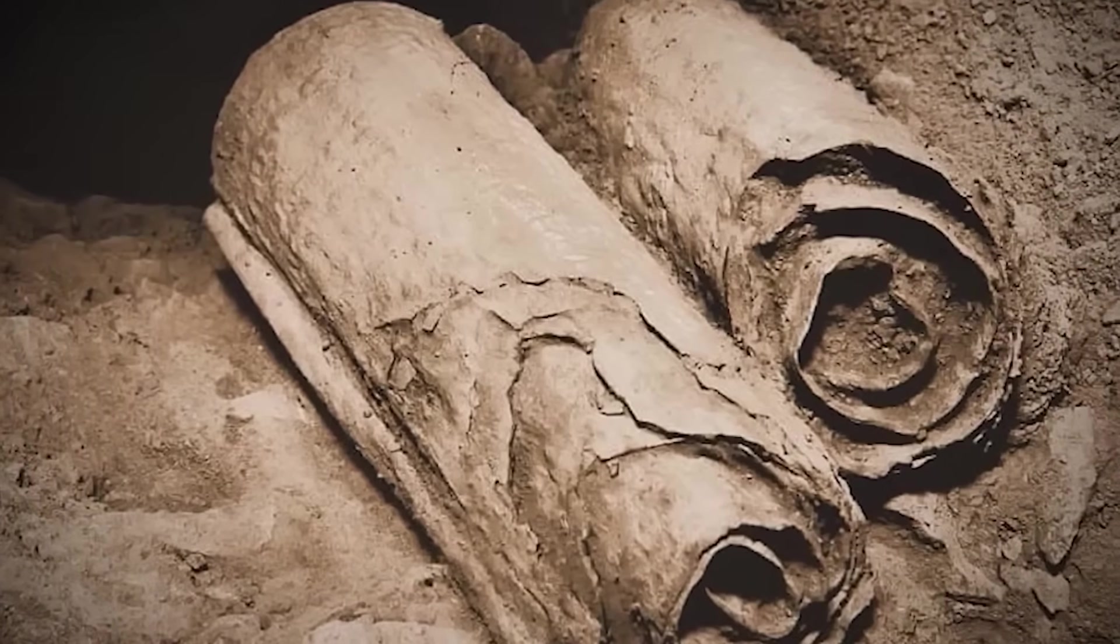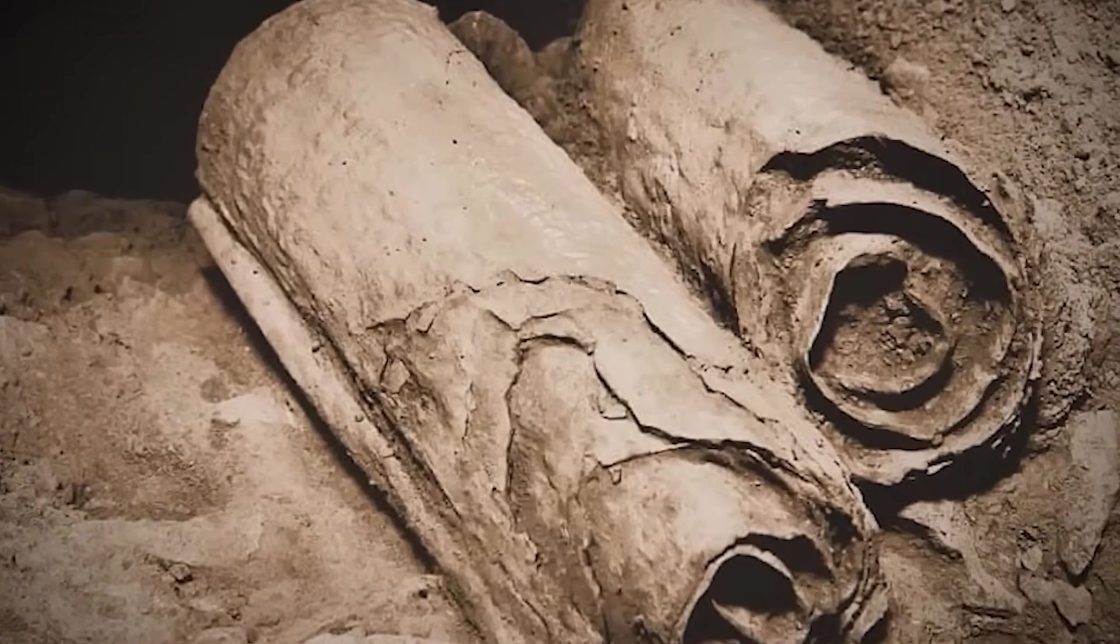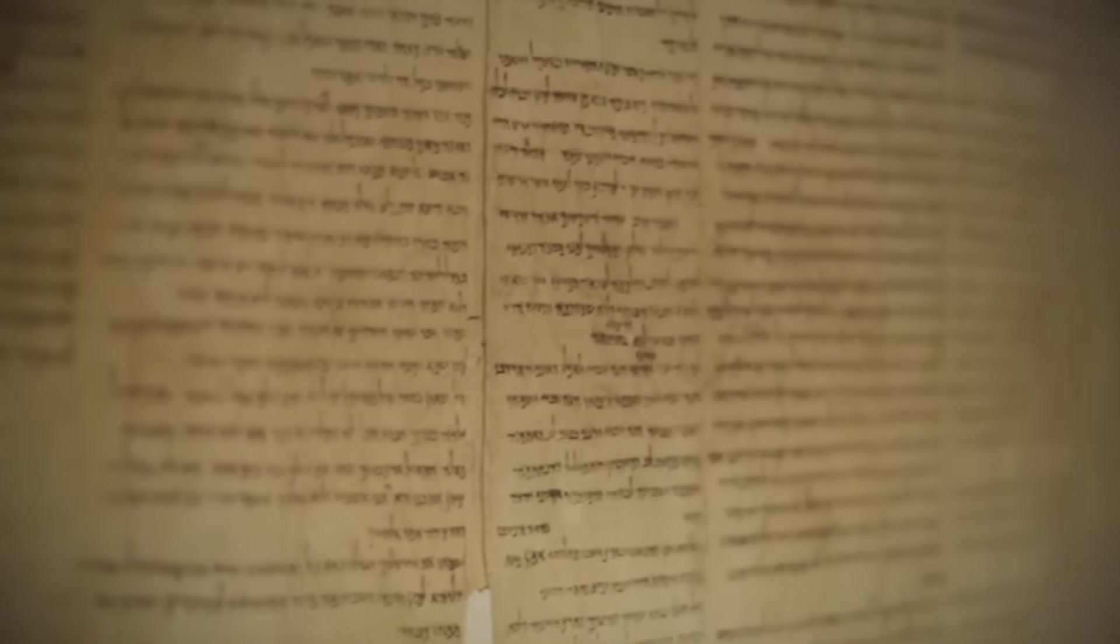The discovery forced archaeologists to reconsider everything about the Copper Scroll. What if this ancient inventory wasn't just listing precious metals? What if it documented objects beyond our historical understanding? This could represent the first textual reference to advanced technology in antiquity, a revelation that challenges the entire timeline of human technological development.